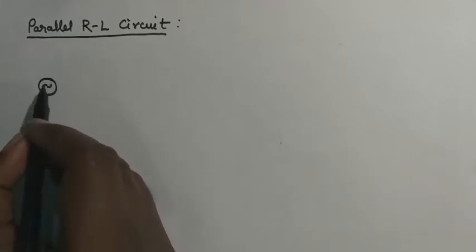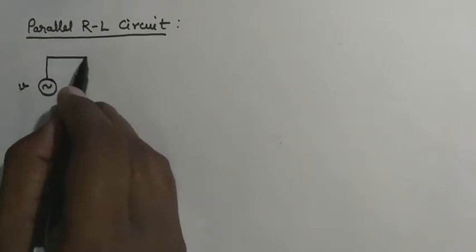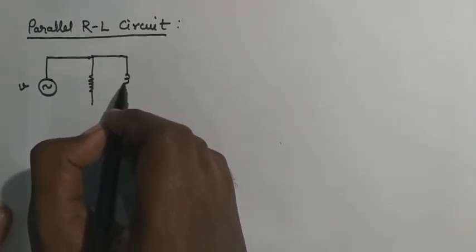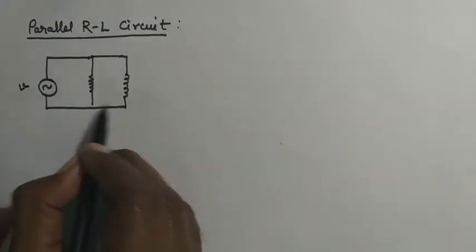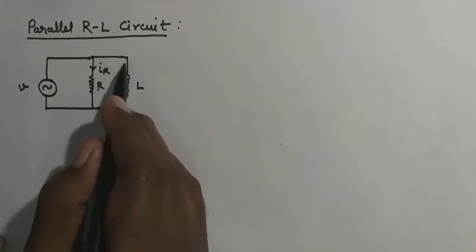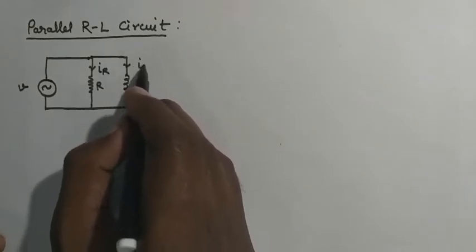Let us start with the parallel RL circuit. First of all we will draw the circuit diagram. We have a single phase AC source with voltage V, and a resistance and an inductor both connected in parallel. This is our parallel RL circuit. We can see that the voltage across the source as well as the voltage across the resistance and inductor will be common.